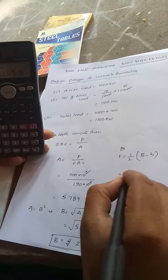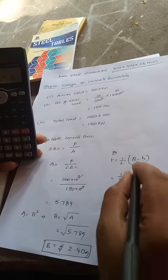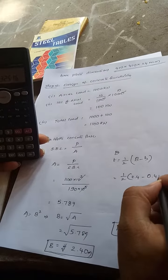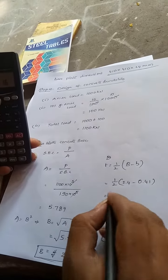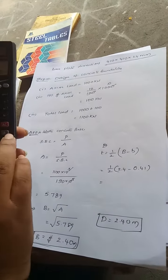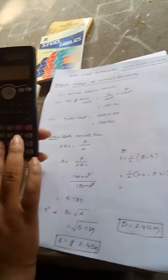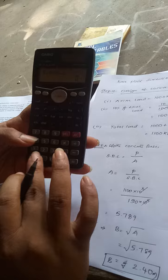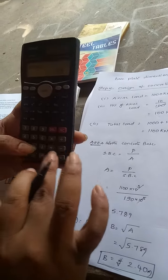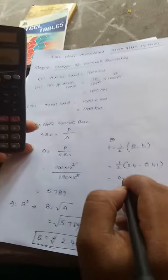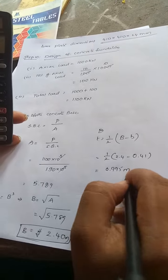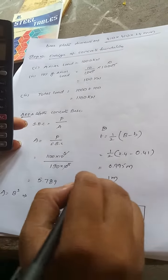B value is 2.4, small b value is 0.41, basically dimensions 410 by 410 mm. Then 2.4 minus 0.41 divided by 2, so 0.995 meter, equal to 1 meter thickness.